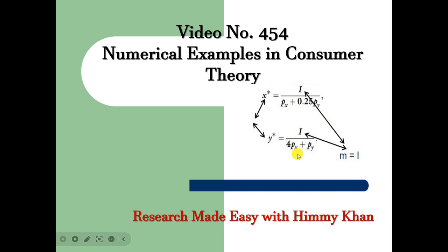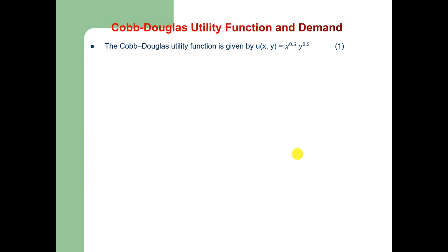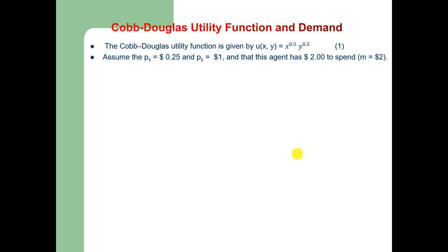Let me start with the simple Cobb-Douglas utility function which is given by u(x,y) = x^0.5 * y^0.5. Let us also assume that the price of x is equal to $0.25 per unit, price of y is equal to $1 per unit, and this consumer has money income equal to $2 that he will spend on x and y. The budget constraint is given by 0.25x + y = 2.